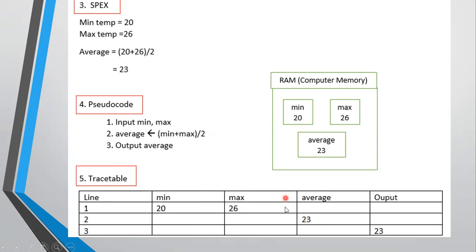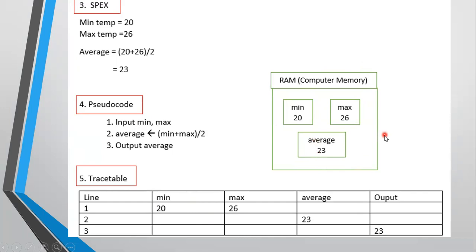We take min, take max, add them, and divide by 2. Line three: your output is 23. The trace table shows what happens in memory — whatever variables you are using can be written in table form. So your trace table represents what happens in RAM.